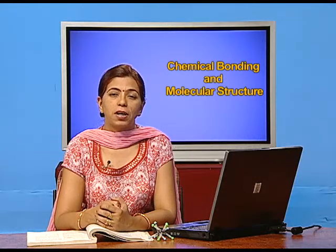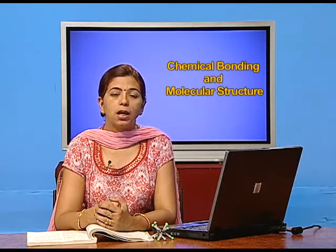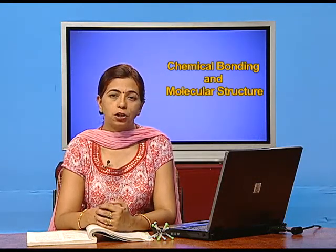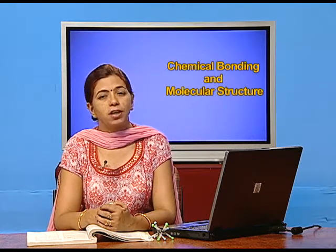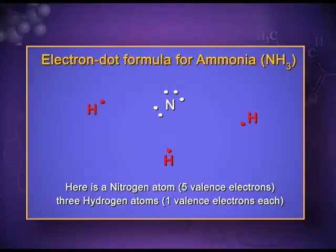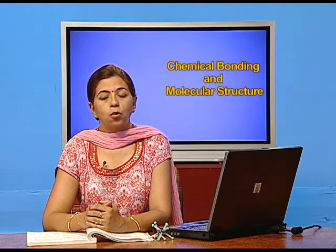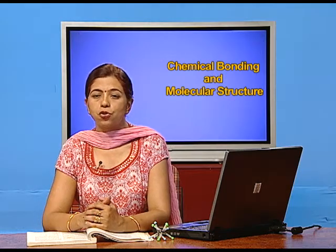Lewis dot structure is a very simple and convenient method to show the sharing of electrons. In ammonia, nitrogen completes its octet and hydrogen completes its duplet.